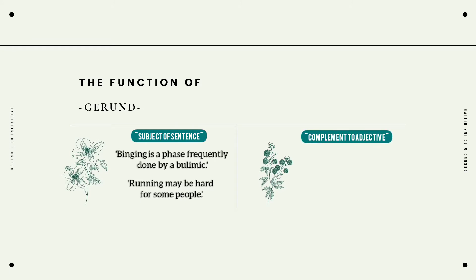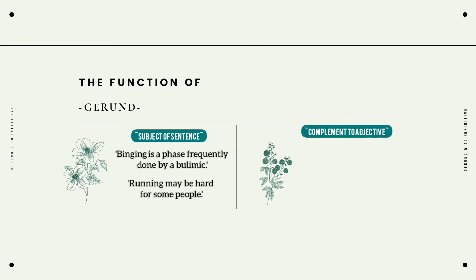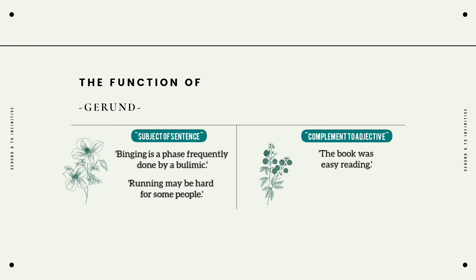The second function of a gerund is complement to an adjective, meaning that the gerund is used as a complement of an adjective word. For example: 'The book was easy reading' and 'He managed to make a good living.'